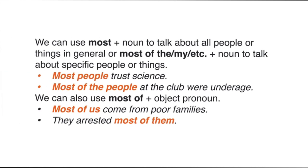Similarly, we use 'most' plus a noun to talk about people or things in general — for example, 'Most people trust science.' We use 'most of the' or 'most of my' plus a noun to talk about specific people or things — for example, 'Most of the people at the club were underage.' We can also use 'most of' with object pronouns — for example, 'Most of us come from poor families' or 'They arrested most of them.'